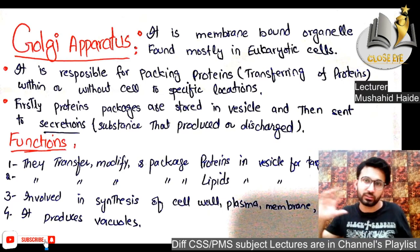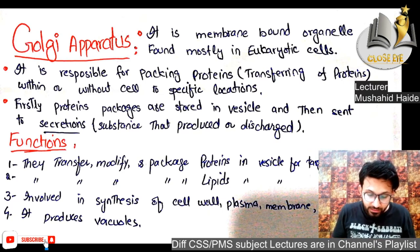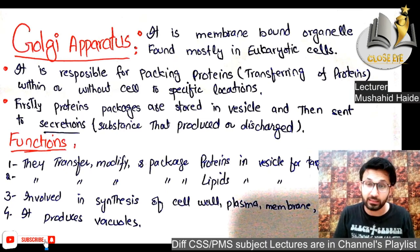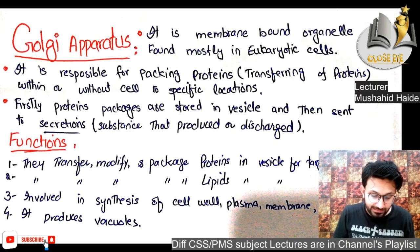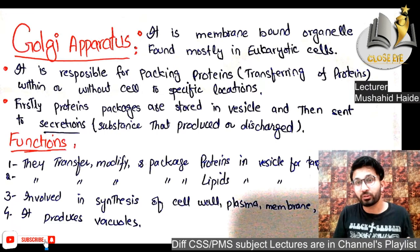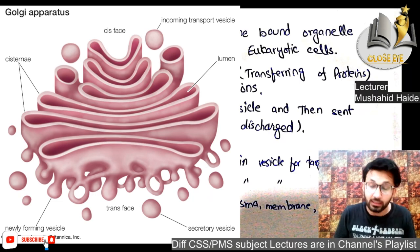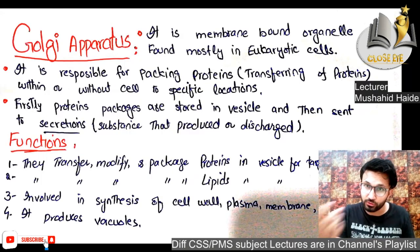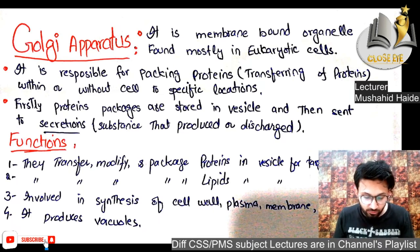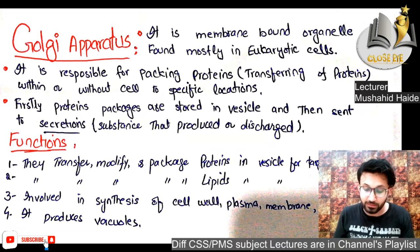The Golgi apparatus is a membrane-bound organelle found mostly in eukaryotic cells. It is responsible for packaging proteins and transferring them within or outside the cell to specific locations. Proteins are first stored in vesicles, then sent to secretion. The Golgi apparatus transfers, modifies, and packages proteins and lipids in vesicles for targeted destinations.